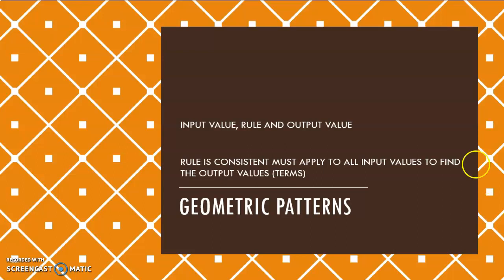When we have geometric patterns, we have an input value, a rule, and an output value. Sometimes you are given the input and the output and you need to find the rule. Other times you are given the input and the rule and you need to find the output. Or you are given the output and the rule and you need to find the input.